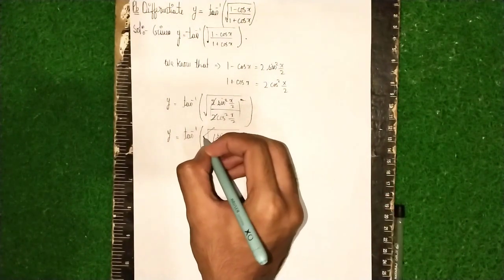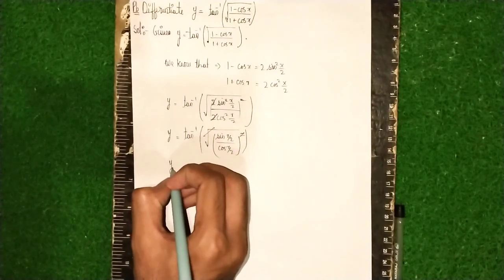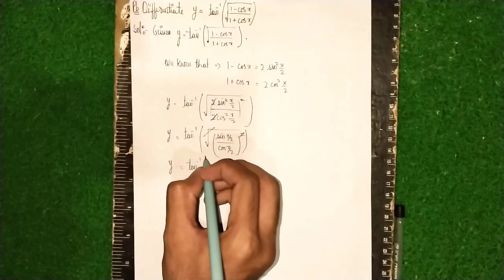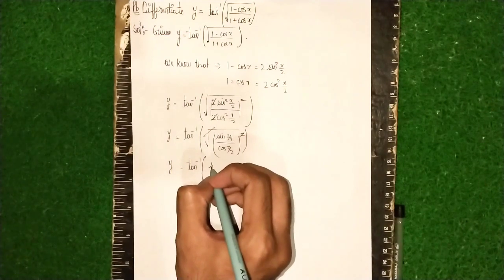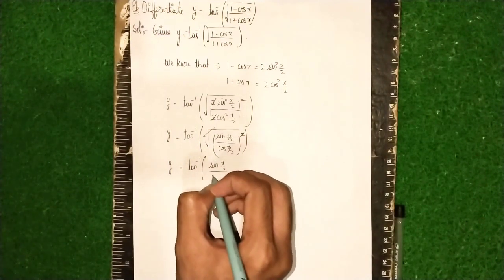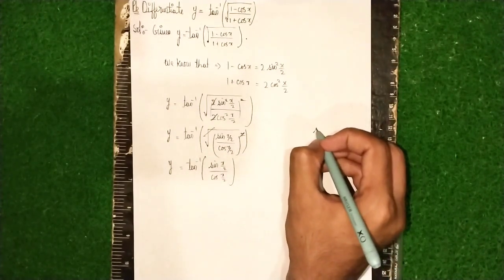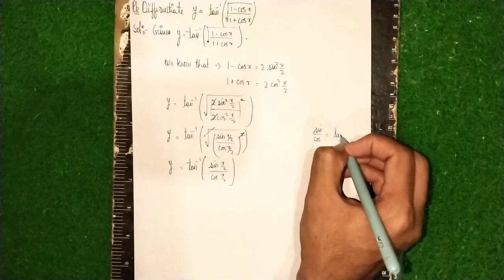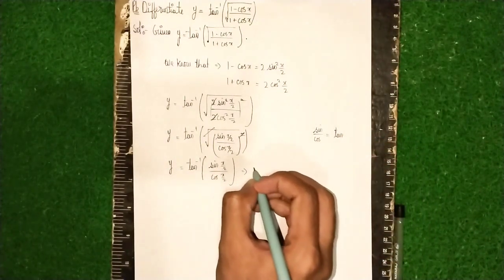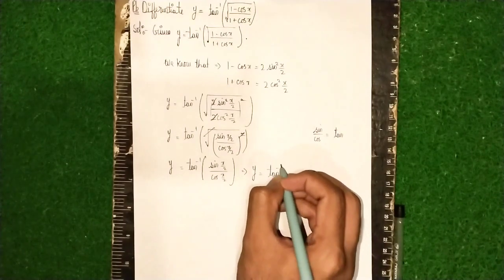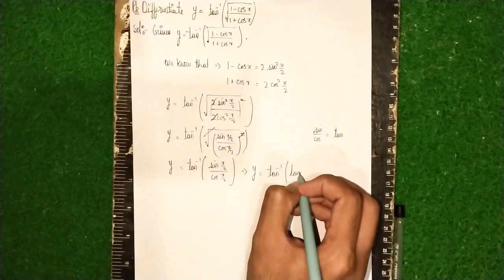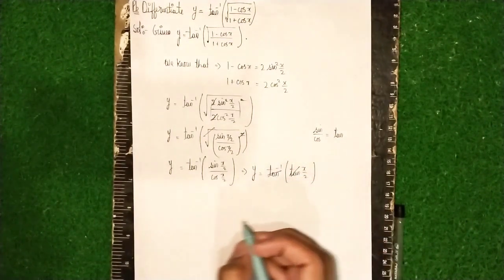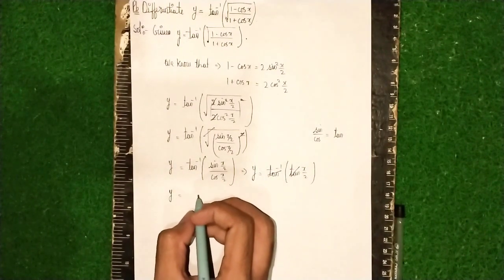After the square and root cancel, we get y is equal to tan inverse of sin x by 2 divided by cos x by 2. Now we know that sin divided by cos is equal to tan, so it becomes y is equal to tan inverse of tan x by 2. The tan and tan inverse cancel each other.